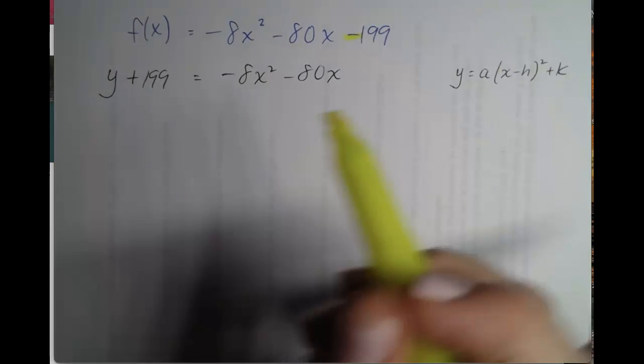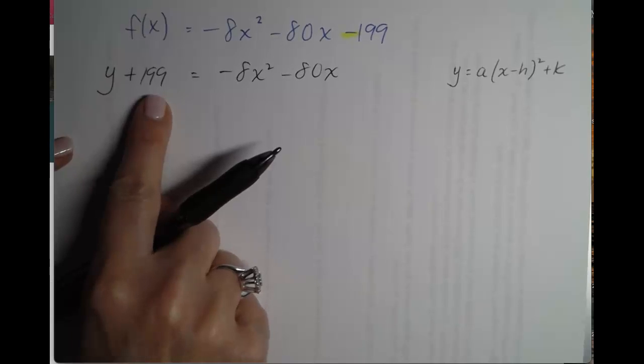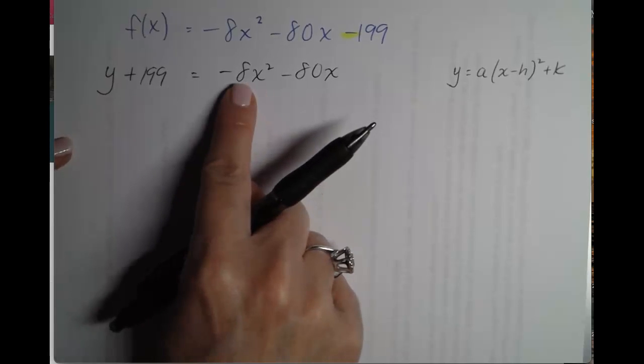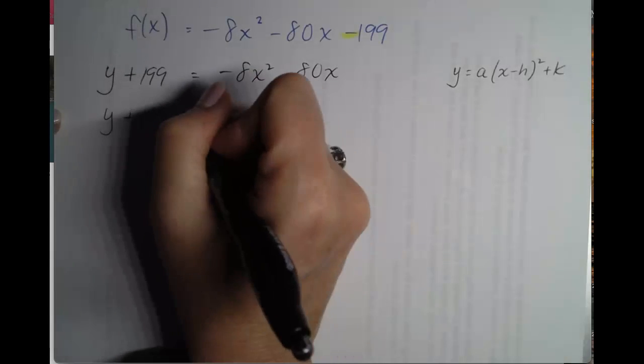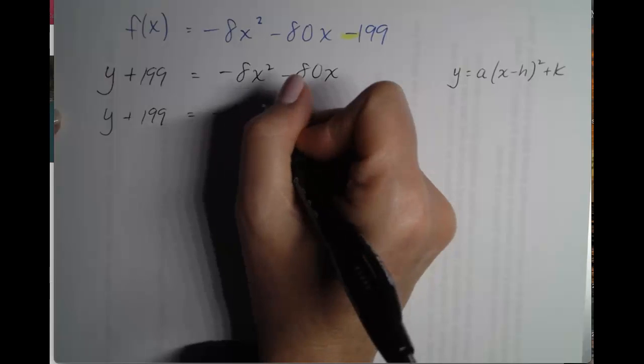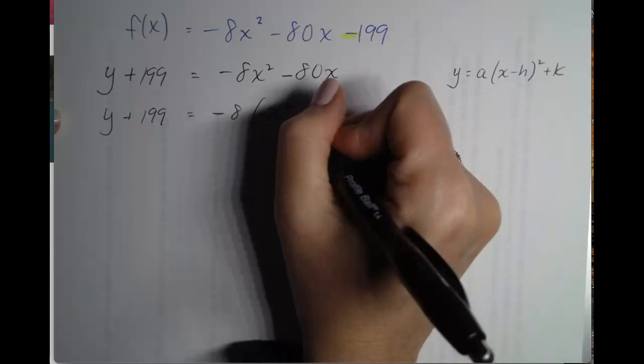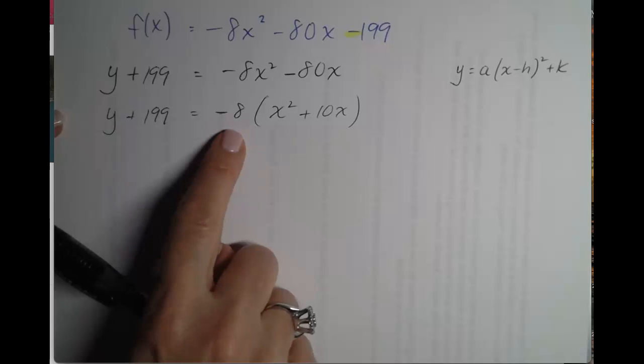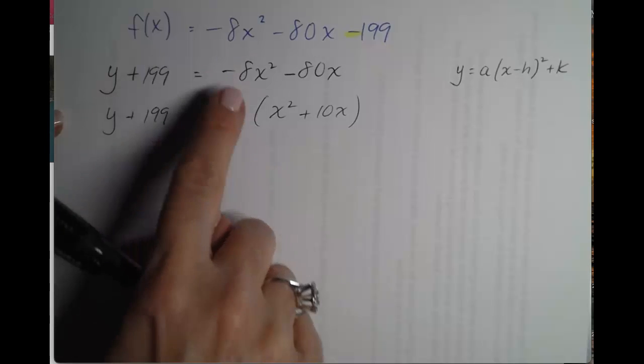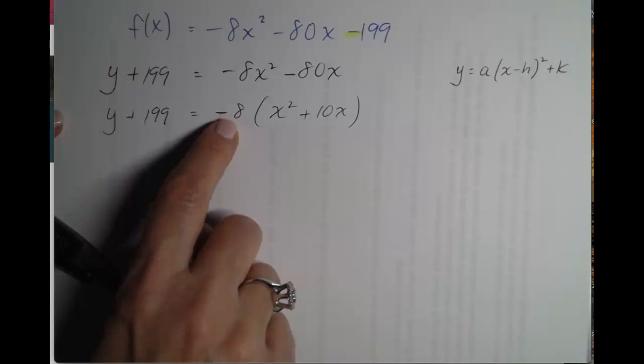Remember, 199 was negative on the right, therefore it will be positive on the left. Next, take out a. y plus 199 equals negative 8 times x squared plus 10x. So we have factored out the a. This parabola has a equal to negative 8. It will be very tall and skinny, but it will be opening down because a is negative.